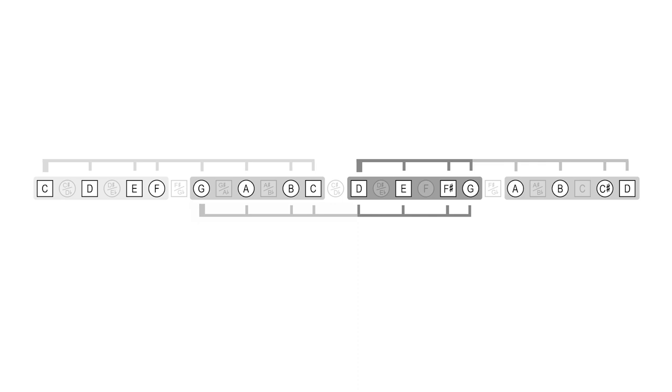And following the same pattern, the second half of G major, D, E, F sharp, G, forms the first half of another scale, D major. These two major scales also overlap, where D major starts on the fifth note of G. So G major, one, two, three, four, five, six, seven, eight. The five, six, seven, eight becomes the one, two, three, four of the D major scale. One, two, three, four, five, six, seven, eight.